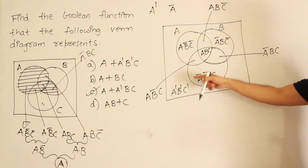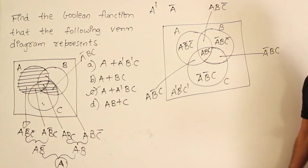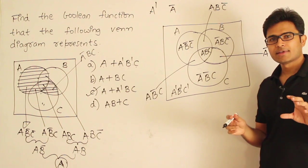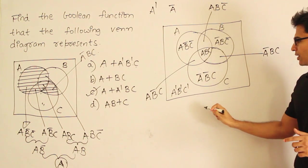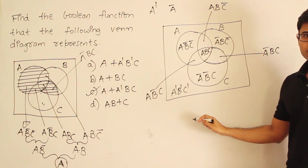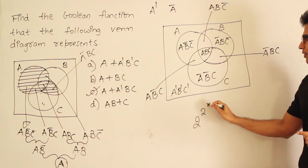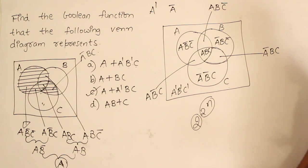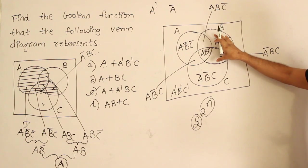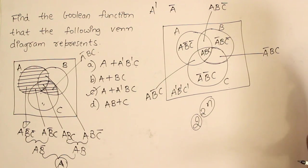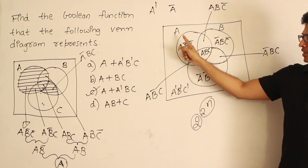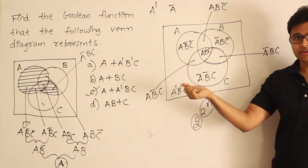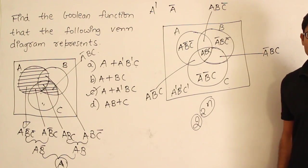We have seen there are 8 areas in this Venn diagram. Every function is a combination of some areas being shaded. So how many functions are possible? If we have n variables, there are 2 power 2 power n functions. This is because 2 power n rows are possible and every row can take 2 values. Therefore there must be 2 power 2 power n ways to shade this Venn diagram.